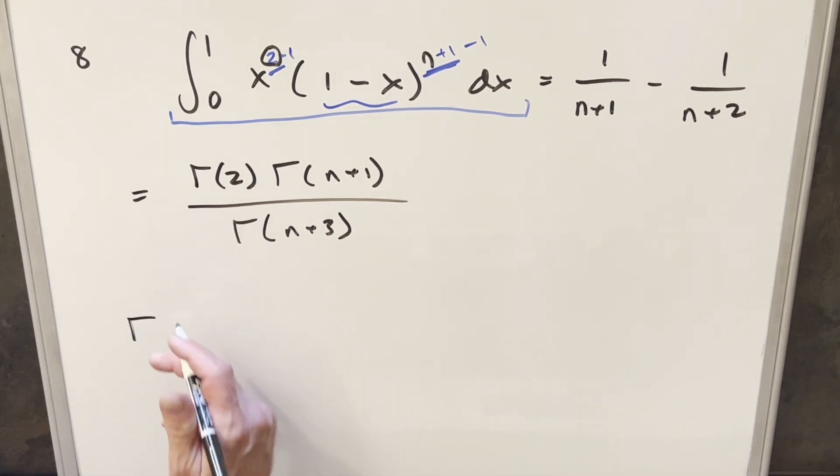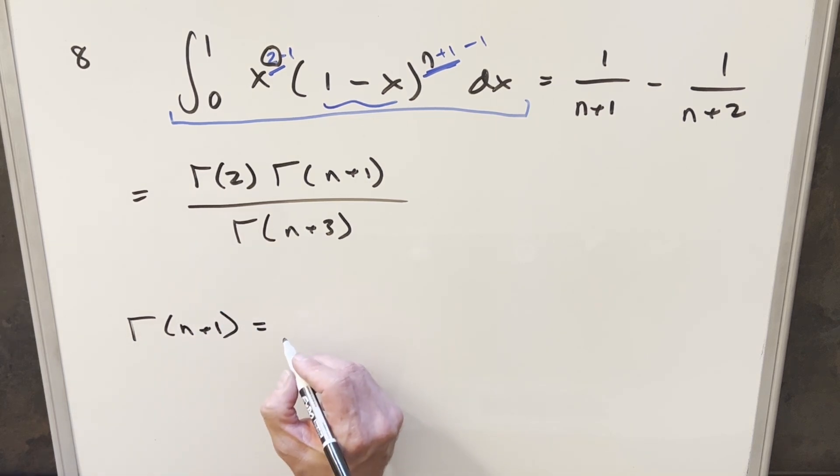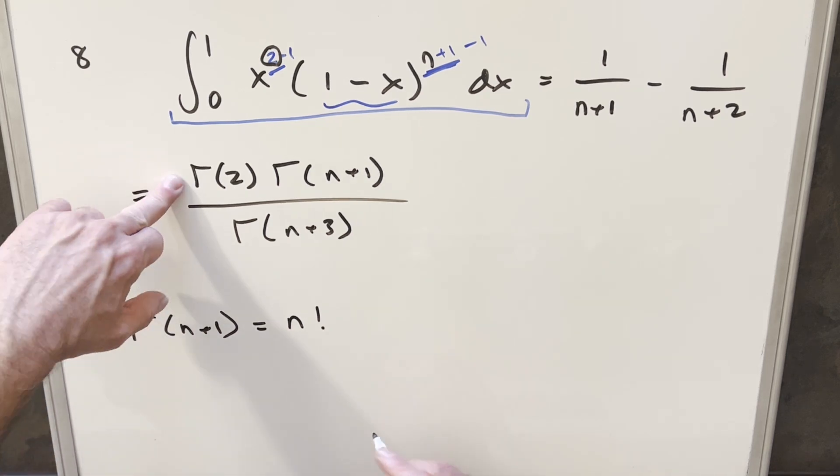But then now to get the simplification, we could have done it directly as factorials, but I'm going to use this formula instead that says gamma of n plus 1 is going to be equal to n factorial, even though assuming that n, we usually want to be an integer. I don't know if that was an assumption of the problem, but I'm not going to worry about that too much. We're just going to use this on this here.